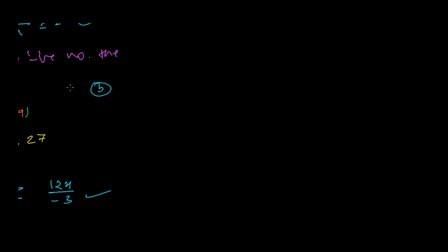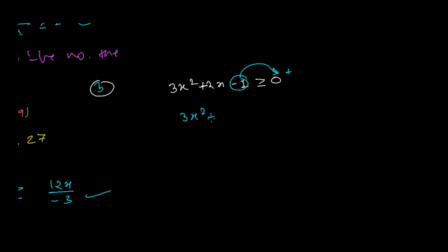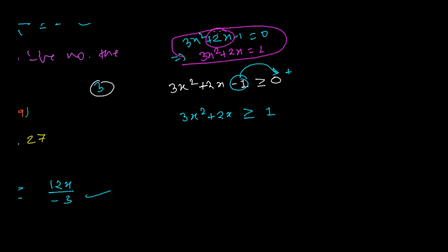The third rule is: you can shift any term from the left-hand side to the right-hand side and vice versa without any change in the inequality symbol. For example, if I have 3x² + 2x - 1 ≥ 0, I can shift -1 to the right-hand side, changing its sign to +1, giving 3x² + 2x ≥ 1. This is just like solving regular equations.